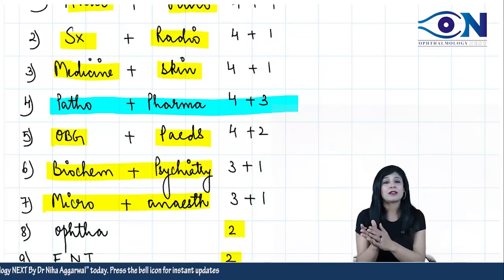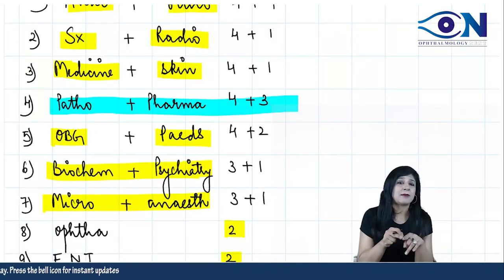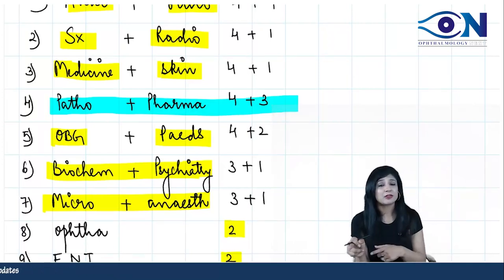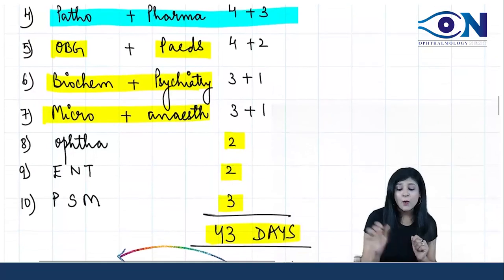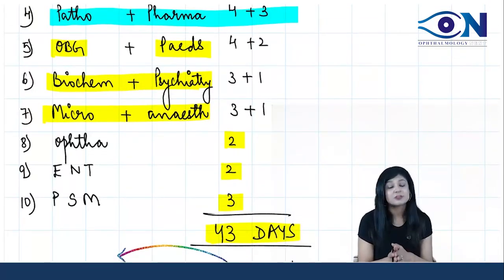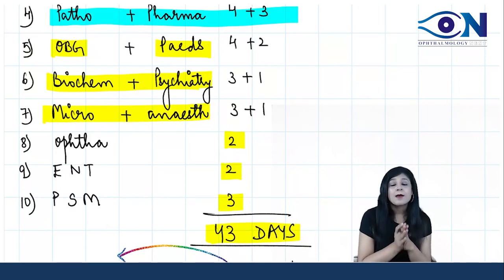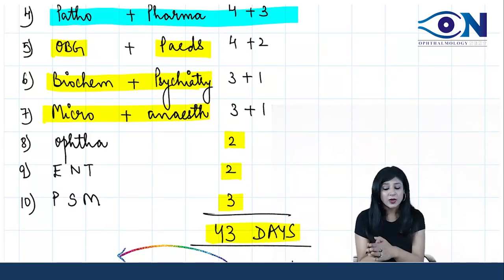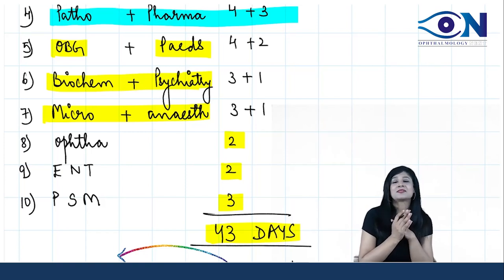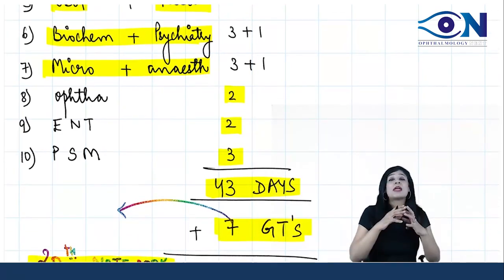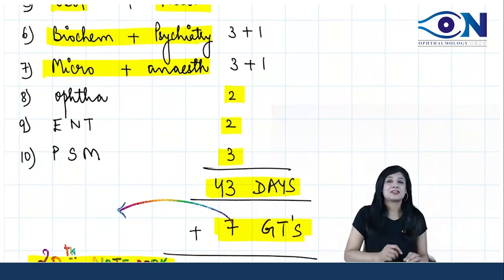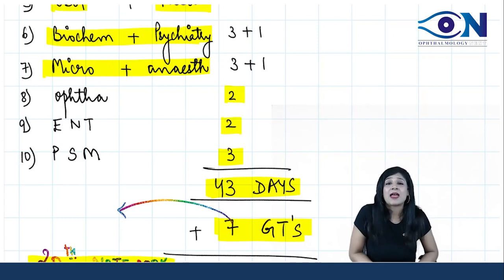The total number of days can be adjusted - subtract from somewhere and add on somewhere if required. OBG with pediatrics four plus two, biochemistry with psychiatry three plus one, micro plus anesthesia three plus one. I am not talking about ophthalmology separately yet, though I am promising every day revision of ophthalmology on my daily quiz on Telegram group. Just give me 10 minutes every day and you will be ready with ophthalmology. But still, I've given you two days for ophthalmology, two for ENT, and three for PSM.